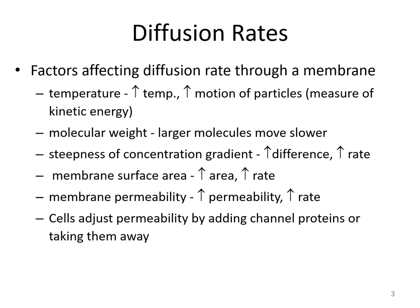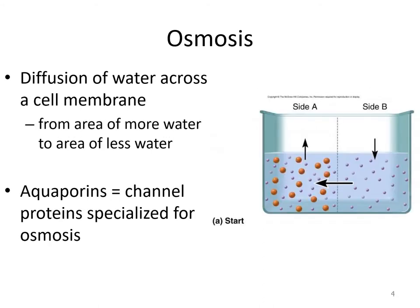Membrane permeability: the more permeable a membrane is, the greater the rate will be. Permeability is a measure of the selective nature of membranes — if a membrane is permeable to something, it will allow that substance through. Cells are actually able to adjust permeability by adding or removing channel proteins through up-regulation of genes. Now let's look at osmosis. Osmosis is defined as the diffusion of water across a cell membrane — all the diffusion principles discussed so far also apply to osmosis.